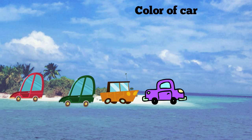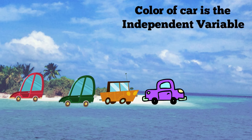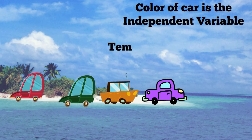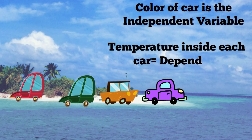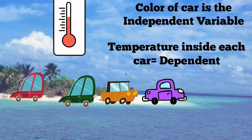The color of the car is your independent variable. It will not change based on the outside temperature. You have four different colors and you are changing this variable by choosing the different colors. The change in the temperature inside each car is your dependent variable. It may vary according to the car's color. You will be measuring this variable by taking the temperature inside the car every 30 minutes for 2 hours.